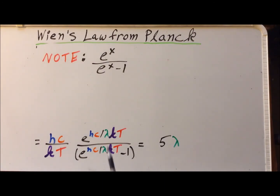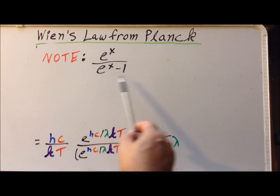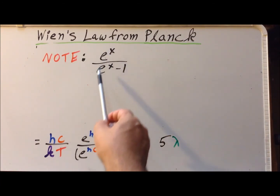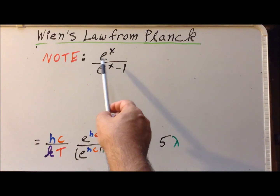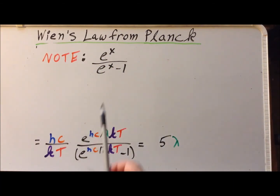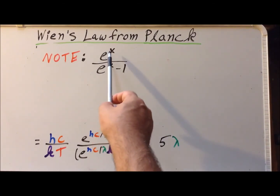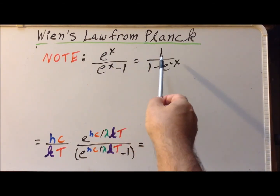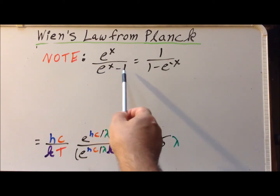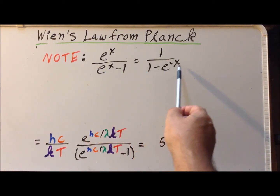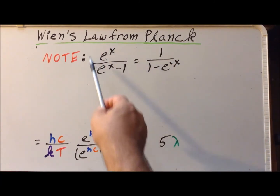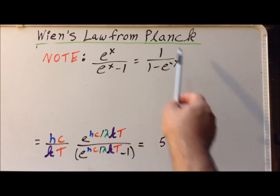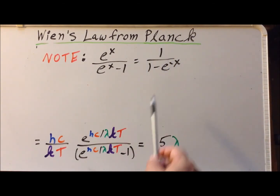The exponential expression is still quite complicated, so we use a simplification technique. We recognize a form similar to e to the x divided by e to the x minus one. Dividing numerator and denominator each by e to the x, the numerator becomes one, and the denominator becomes one minus e to the minus x. This reduces us from two exponentials to an expression with only one, and we apply this identity to our derivative.